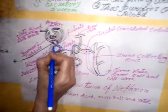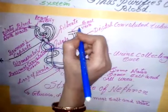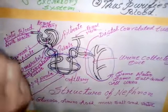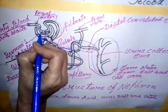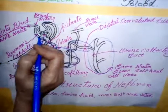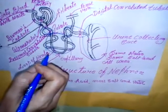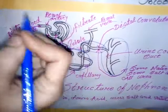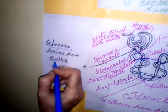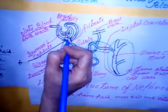Function of the nephron: Dirty blood containing useful as well as harmful substances is brought by the renal artery into the glomerulus. The glomerulus acts as a filter. It allows smaller molecules to pass through, but does not allow bigger ones. So protein and blood cells, being larger in size, remain behind in the glomerulus, whereas smaller substances — glucose, amino acids, salt, water, and urea — pass through the glomerulus and are collected in the Bowman's capsule as filtrate.